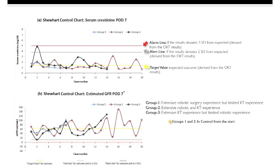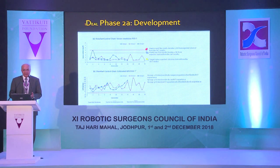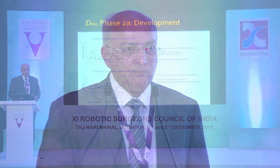For any given metric — discharge creatinine, eGFR, or similar value — a target based on open transplant data was set. Two standard deviations defined an alert line; three standard deviations defined an alarm line. If any value crossed the alert line, the team would convene to discuss why and correct the issue. If it reached the alarm line, the study would stop. All these parameters were monitored during the development phase to ensure patient safety.